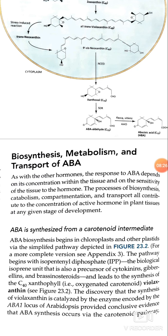ABA biosynthesis begins in chloroplasts and other plastids via a simplified pathway. The pathway begins with isopentenyl diphosphate, the biological isoprene unit, which is also a precursor of cytokinin, gibberellins, and brassinosteroids, and leads to the synthesis of the C40 xanthophyll — an oxygenated carotenoid. The discovery that the synthesis of violaxanthin is catalyzed by the enzyme encoded by ABA1 locus of Arabidopsis provided conclusive evidence that ABA synthesis occurs via the carotenoid pathway.